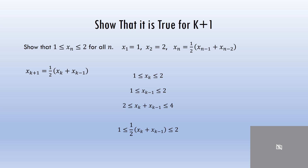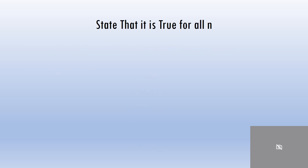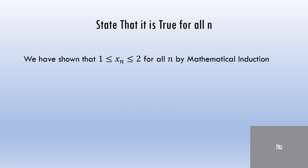I've used the previous two elements, x sub k and x sub k minus 1. As long as they're between 1 and 2, I can show that x sub k plus 1 is between 1 and 2. That's what I set out to show. So using strong induction, I've shown that everything in my sequence is going to be between 1 and 2. We have shown that 1 is less than or equal to x sub n, which is less than or equal to 2, for all n by mathematical induction. Thank you for watching.